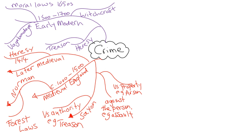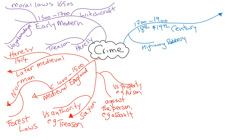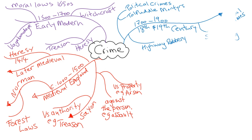Moving into the 18th and 19th century, trade in England and Britain is beginning to flourish, so people are carrying large amounts of money — leading to highway robbery. With the development of the Industrial Revolution, you get more political crimes like joining trade unions. And as Britain gains more empire and goods are imported, you get social crimes like smuggling.